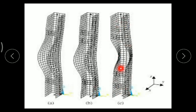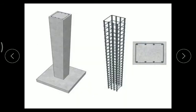If a column deflects such that the load is in one direction and deflection is in the perpendicular direction, that is known as buckling. Depending upon the length, columns are classified as short columns and long columns. To take care of bending or buckling, we require longitudinal reinforcement. To hold this reinforcement in position, we require ties.